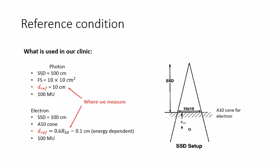For electron beam, it is slightly more complicated, because the dref is energy dependent. So we place the ion chamber at different depths for different energy.